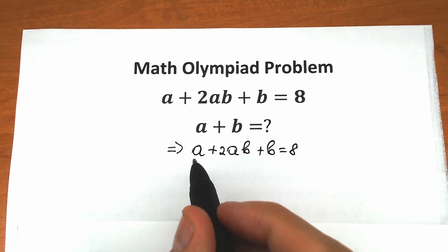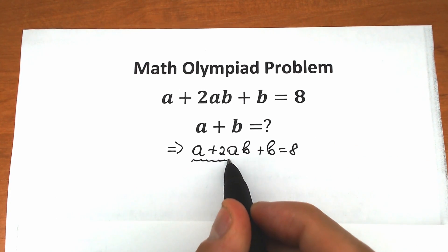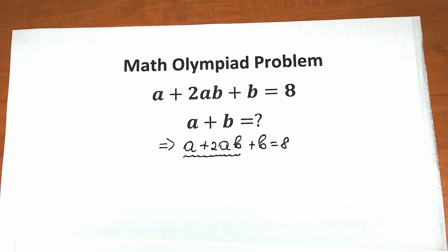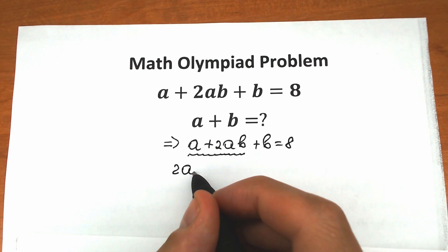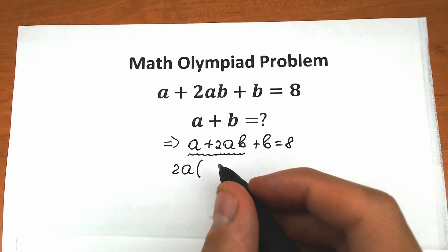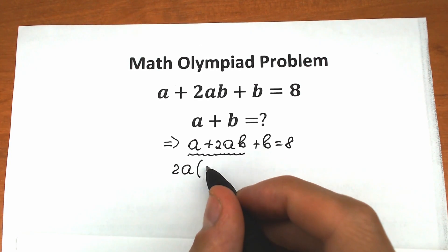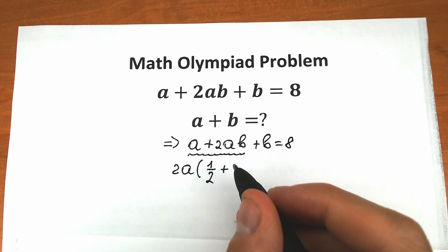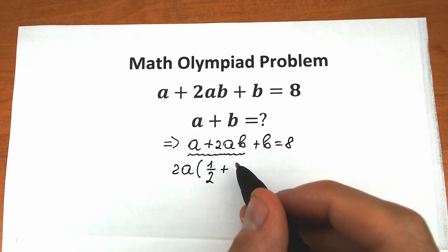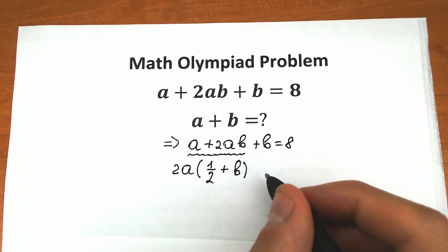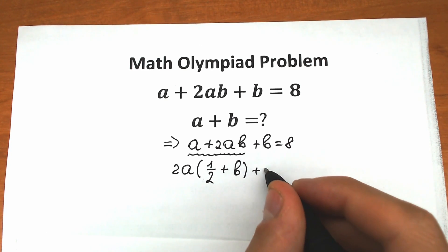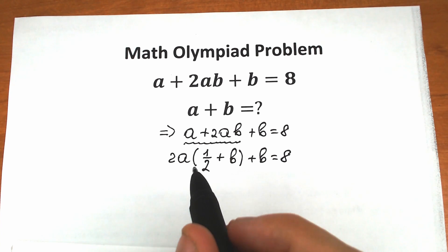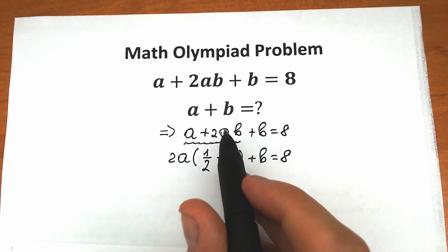First, let's rewrite this challenge. We have a plus 2ab plus b equals 8. From the expression a plus 2ab, let's factor out 2a. So we get 2a times (1/2 plus b), plus b, equals 8.